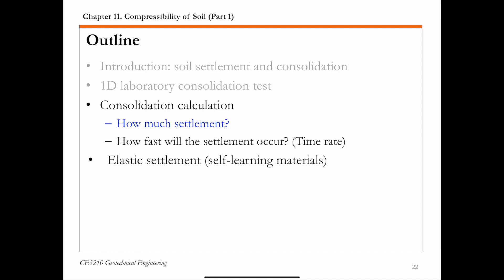Now we have introduced some basic concepts related to consolidation in clays. Next, we're going to focus on consolidation calculation. We're going to try to answer the following two questions. The first question deals with the magnitude — basically, how much settlement do you expect from primary consolidation. And the second question is how fast will settlement due to primary consolidation occur, which deals with the time rate of consolidation. We're going to start with the first question: the magnitude of settlement.